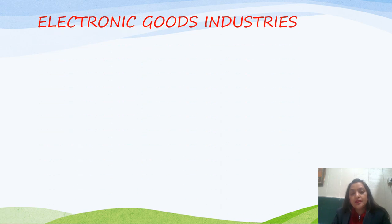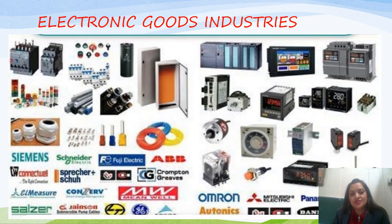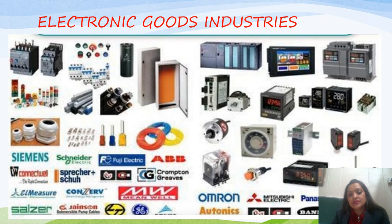The next important mineral-based industry is the electronic goods industry. These industries are basically located in Bengaluru, Delhi, Kolkata, Lucknow, Pune, Coimbatore, Chennai, Mumbai, etc. As we can see in the picture, most electronic goods - that is electronic meters, electronic pipes, electronic wire, and all other things used in electronics - are made in electronic goods industries.